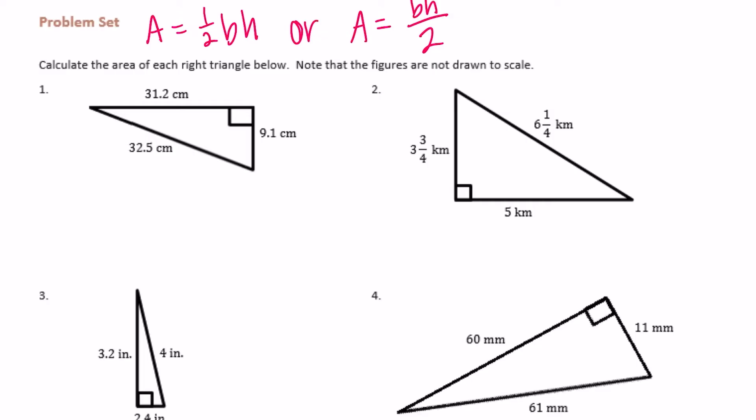For number 1, we need to find the base and the height. Here is the base and here is the height — we find those by locating where the right angle is formed, making it a right triangle. I'm going to do base times height divided by 2, which is what I prefer when we don't have fractions. So let's do 31.2 times 9.1.